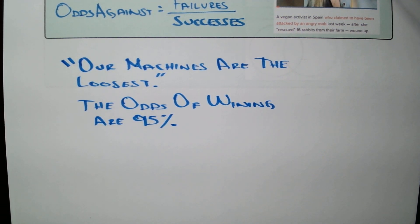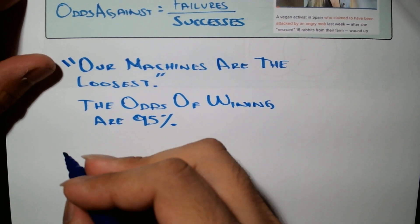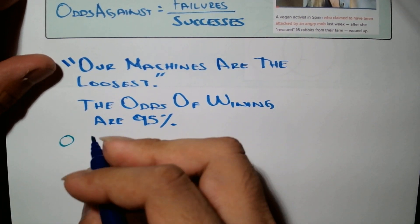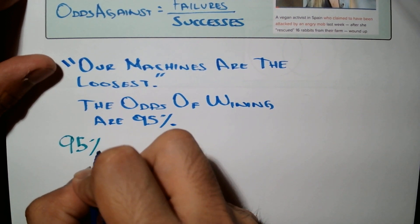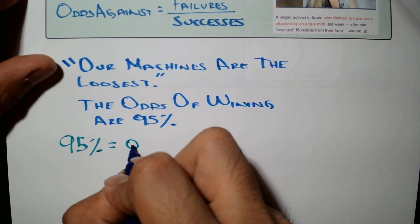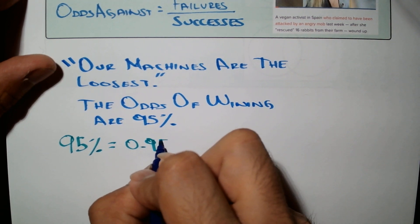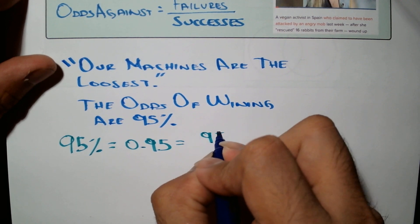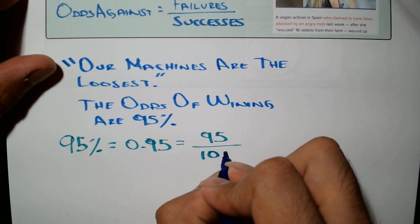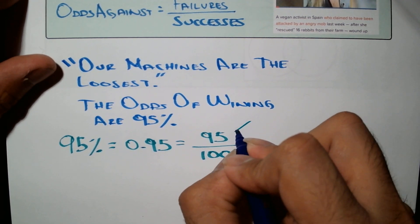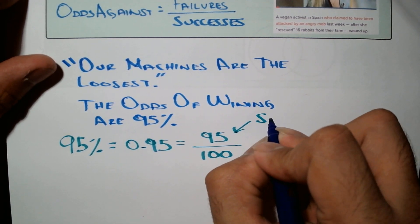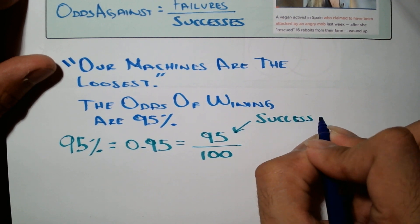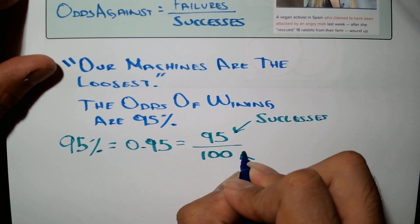What this is really saying is: 95% odds of winning is the same as 0.95, which is 95 over 100. That means 95 is the number of successes divided by 100, the number of failures.